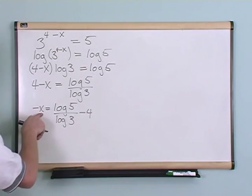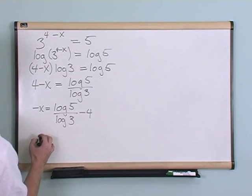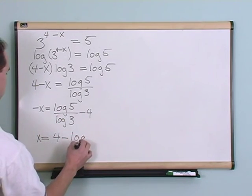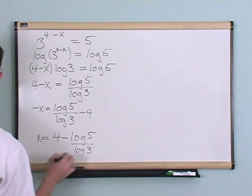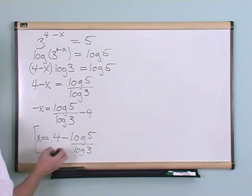And to finally solve for x I can just divide both sides by negative 1 which is going to change the signs over here. So x will then equal 4 minus log of 5 over log of 3. And I just change the signs because I divide by negative 1. This would be the answer. Again you could go in your calculator and you could plug these log 5 log 3 in and get a decimal.